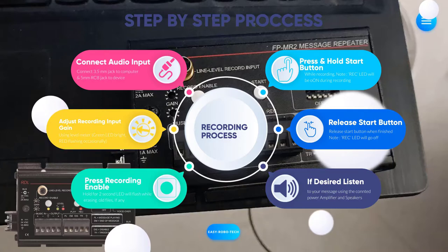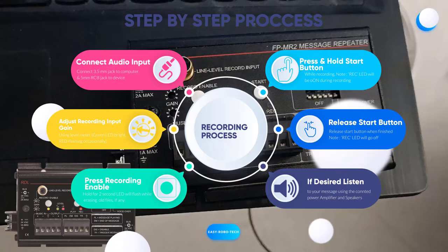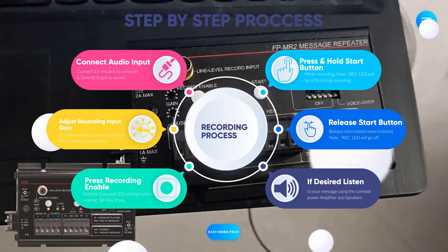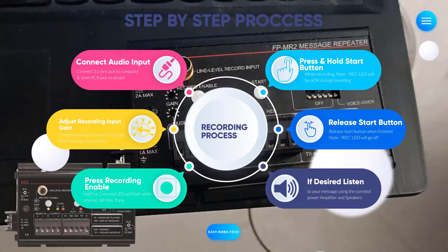The output level is indicated on an RDL dual LED VU meter, which is used to set the proper music and recording levels.